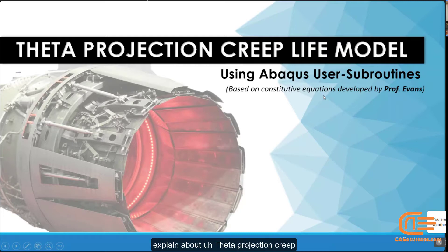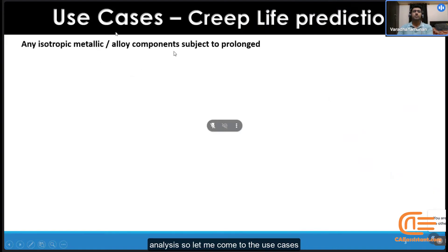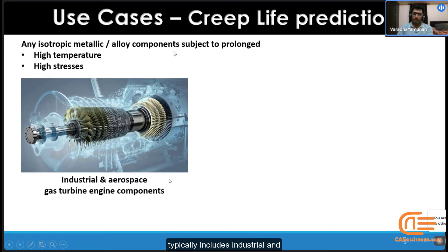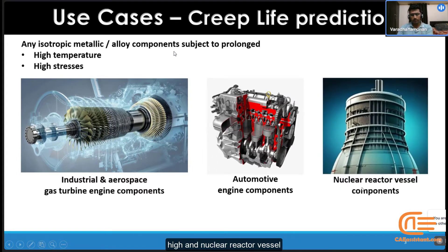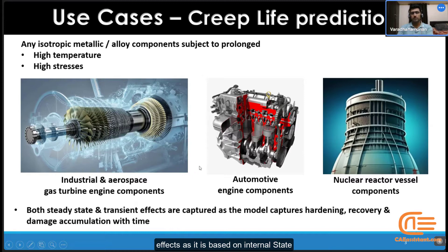I would like to explain about the theta projection creep model using Abaqus subroutines, and this is based on the constitutive equations developed by Professor Evans, who has done a significant contribution to creep analysis. This model can be used for any isotropic metallic or alloy components subjected to high temperature and high stresses, which typically includes industrial and aerospace gas turbine engine components, as well as automotive engine components and nuclear reactor vessel components. My model can capture both steady state and transient effects, as it is based on internal state variables such as hardening, recovery, and damage accumulation with time — so time effects and damage effects can be modeled in this system.